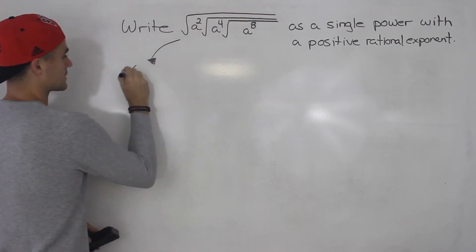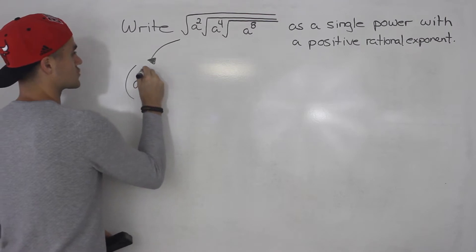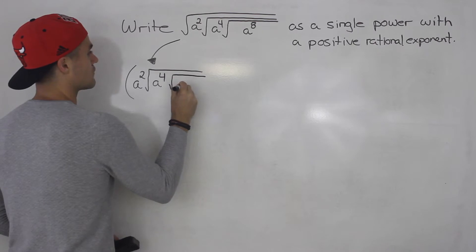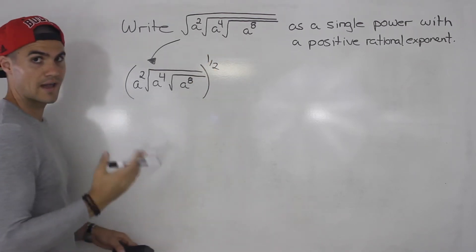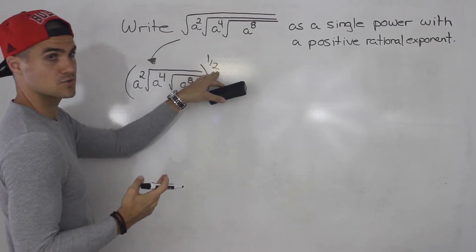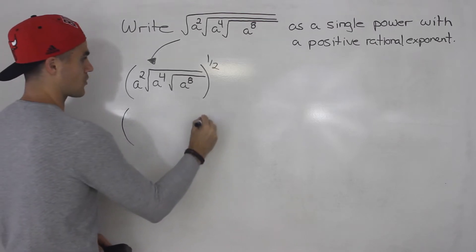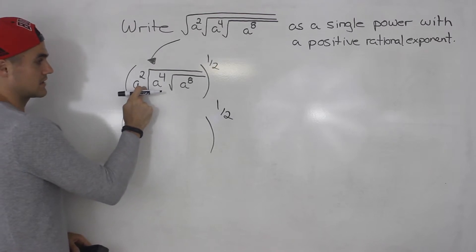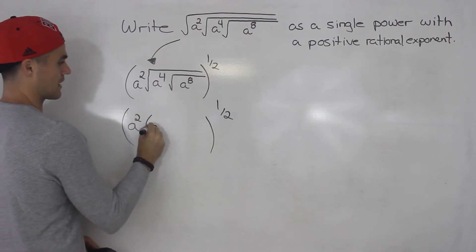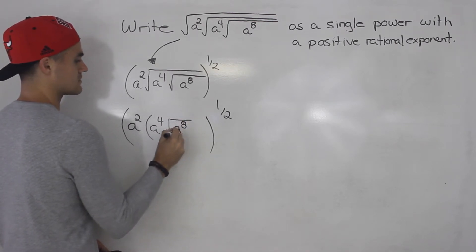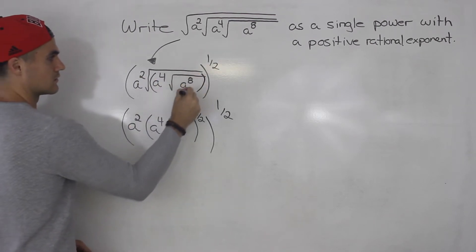Let's start with the outside. We would take everything inside the big square root — we have a squared, then the square root of a to the 4, and the square root of a to the 8 — and that's going to be all to the power of a half. So all I did was take the square root on the outside and switch it to a rational exponent. Now I'm going to take this next square root and switch it to a rational exponent as well. Notice this a squared is not under this square root, so it stays on the outside, and everything else goes in brackets: a to the power of 4, then the square root of a to the power of 8, all to the power of 1 half.